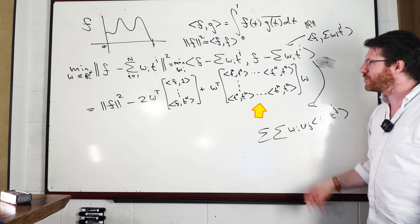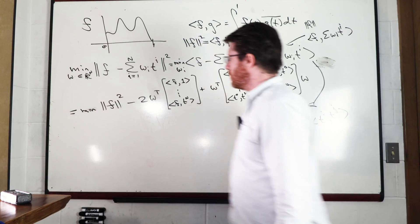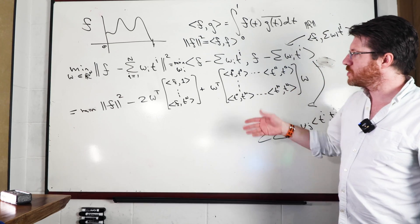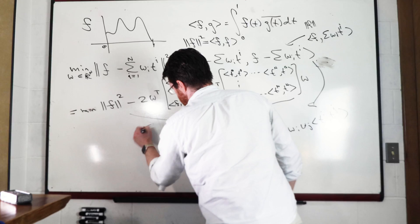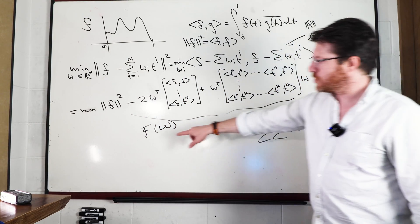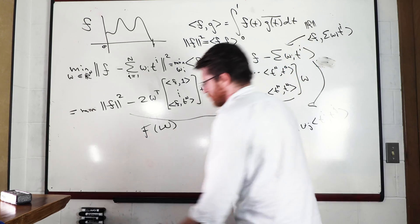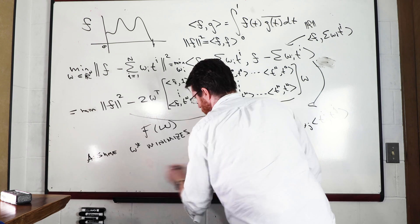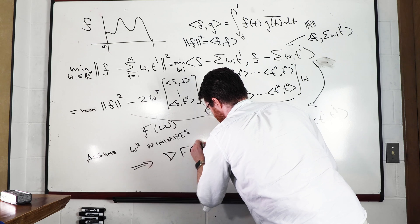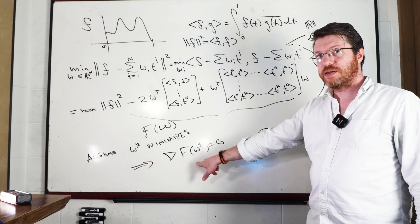We're looking for the w that minimizes all this — call it w*. If we call this whole equation capital F(w), we're trying to minimize F(w). We'll assume w* minimizes it, which tells us the gradient of F with respect to w* should equal zero. So I take the gradient, set it equal to zero, and find w*.